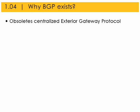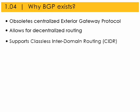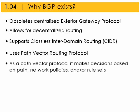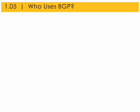BGP was created to replace the Exterior Gateway Protocol, to allow for fully decentralized routing and the removal of the NFS internet backbone network. The major enhancement in BGP version 4 was support of classless interdomain routing and use of route aggregation to decrease the size of routing tables. BGP uses a path vector routing protocol where each router learns routes from its neighbor's perspective and advertises them from its own perspective.